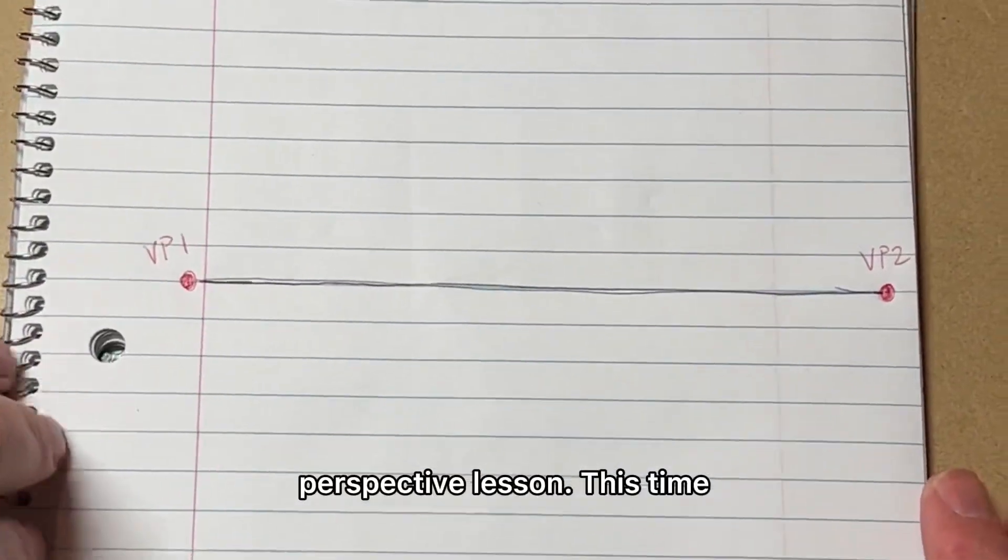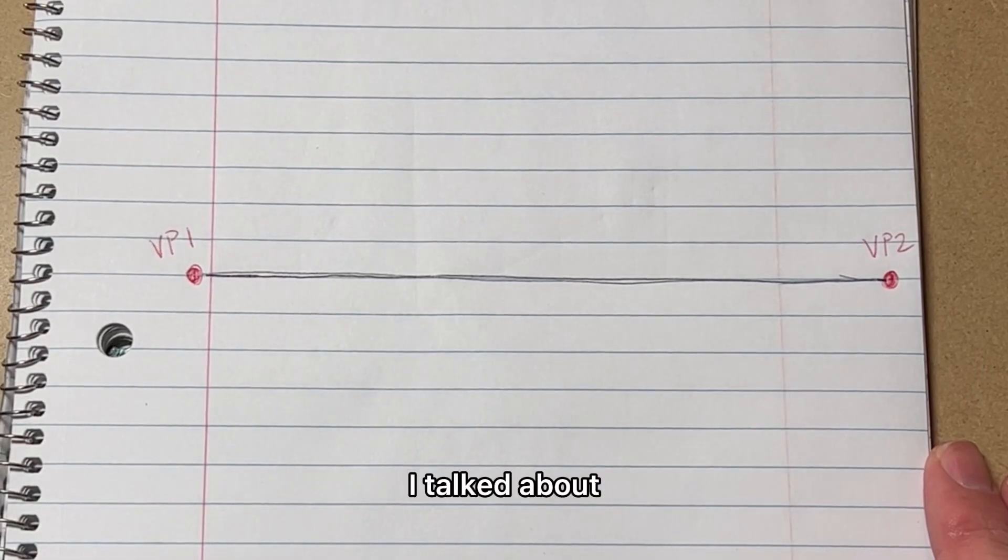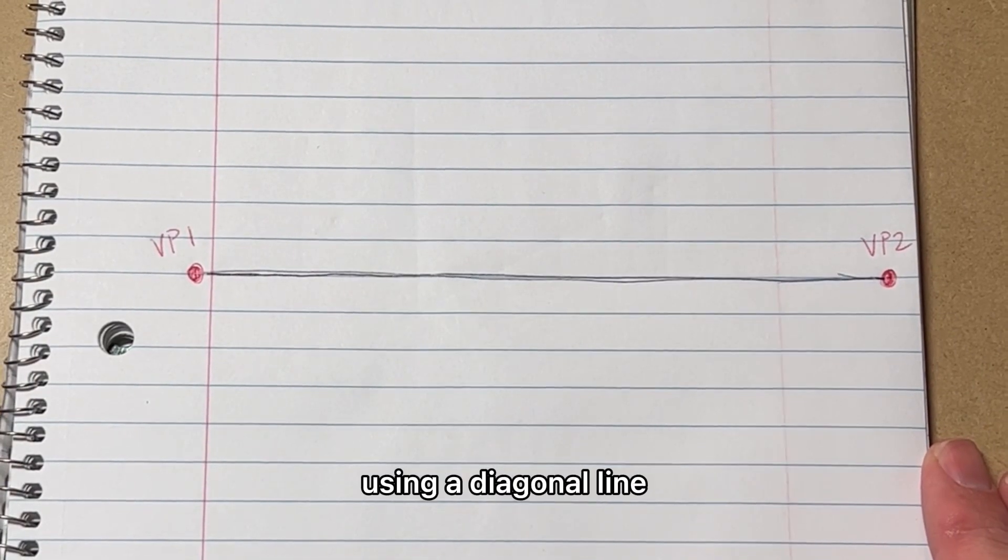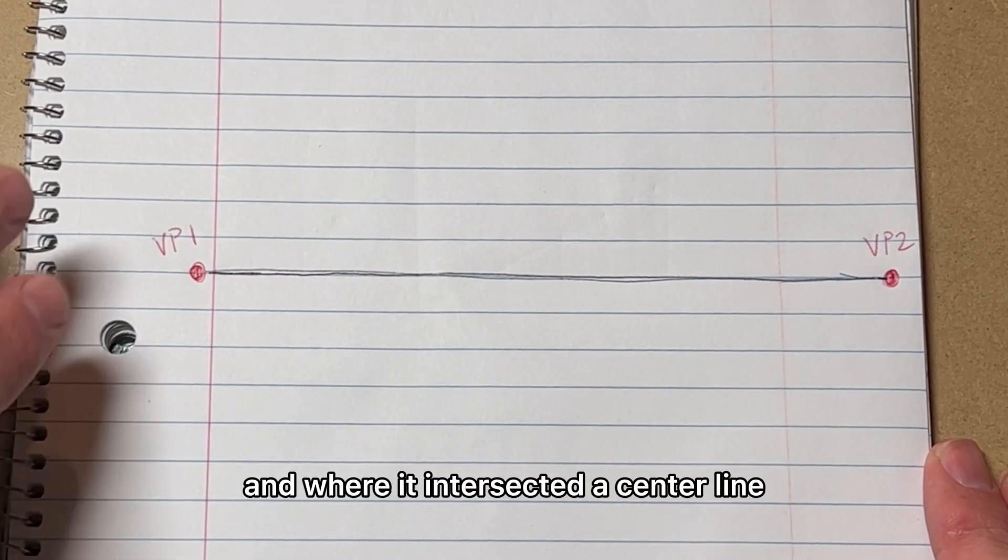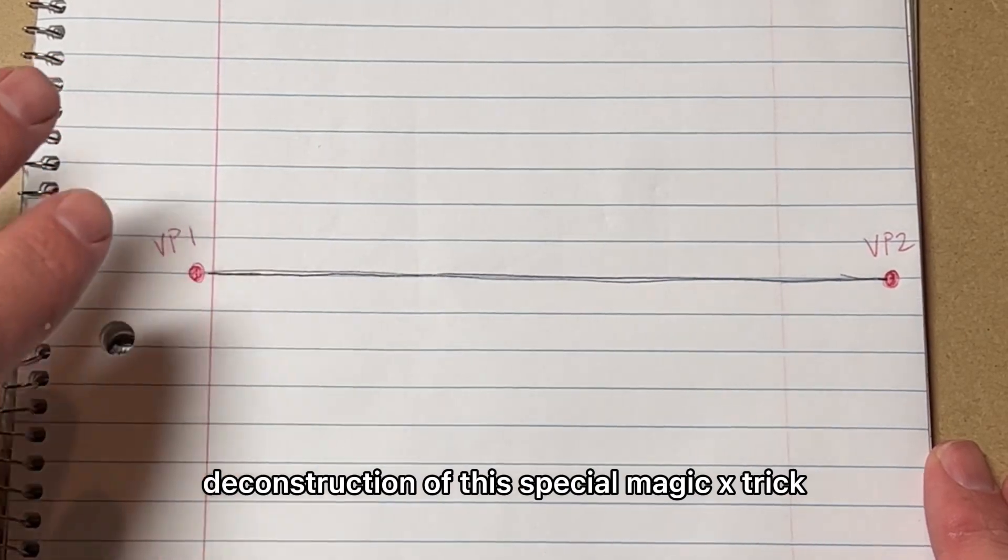It's time for another notebook paper perspective lesson. This time I'm going to talk about the Magic X. In a previous video, I talked about the perspective trick of dividing spaces in perspective using a diagonal line and where it intersected a center line. Well, that's just a deconstruction of this special Magic X trick.